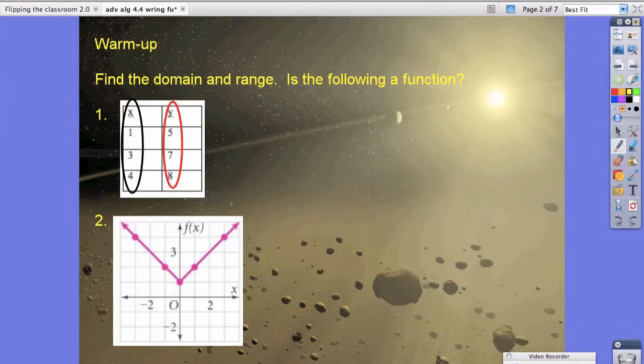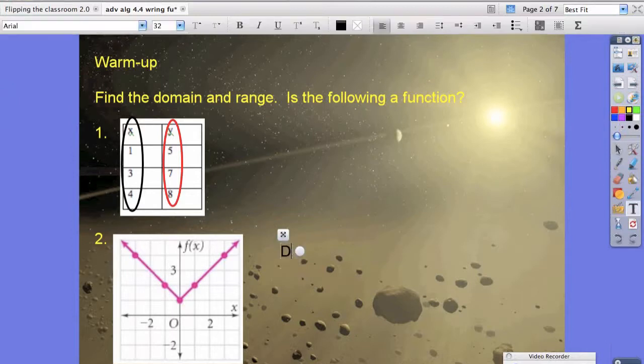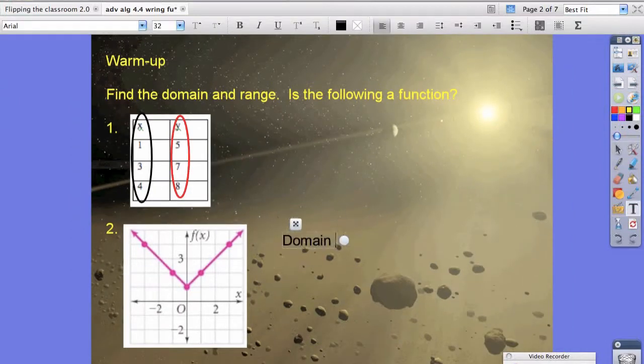As we track this graph, this absolute value graph to the left, notice it has this arrow, which means it continues infinitely long. So that's going to continue to go all the way to the left and all the way to the right. So we could say that our domain is all real numbers.